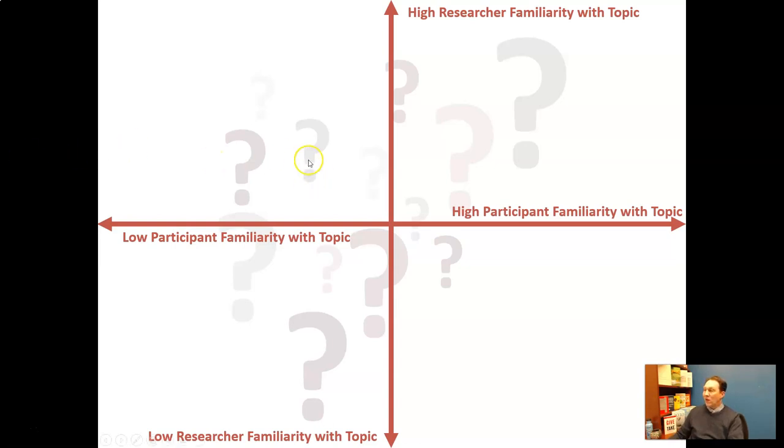I have this grid here that has different levels of familiarity that a researcher might have with a topic as well as that a participant might have with a topic. This two by two is really useful because it can help us to look at four different approaches.